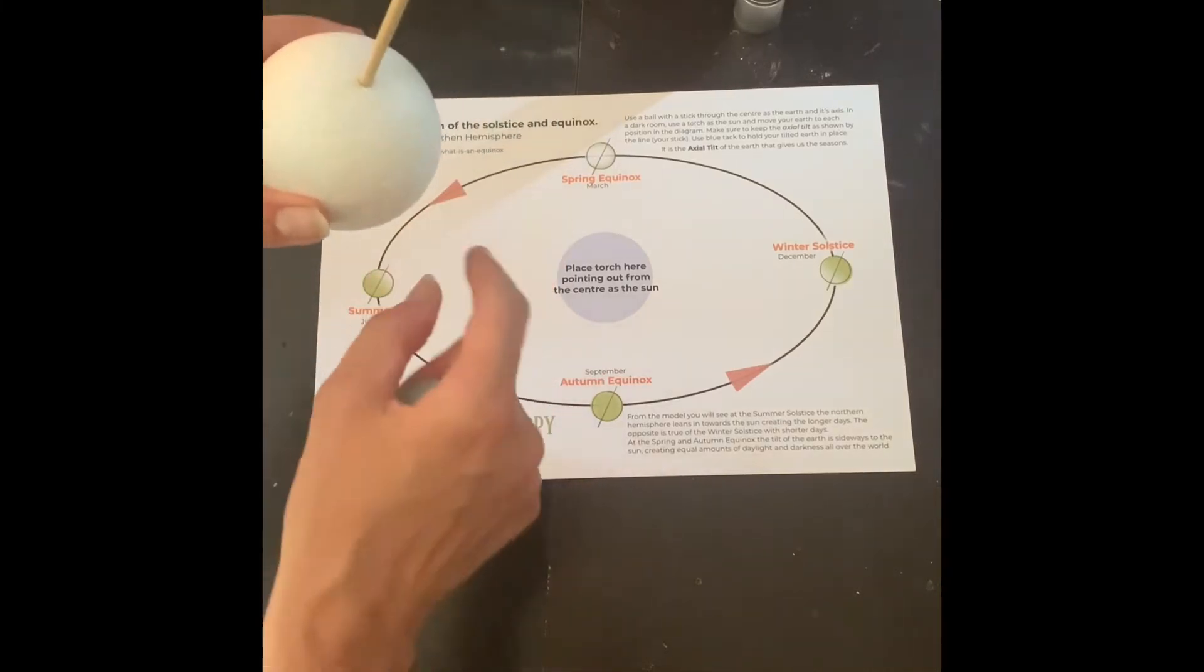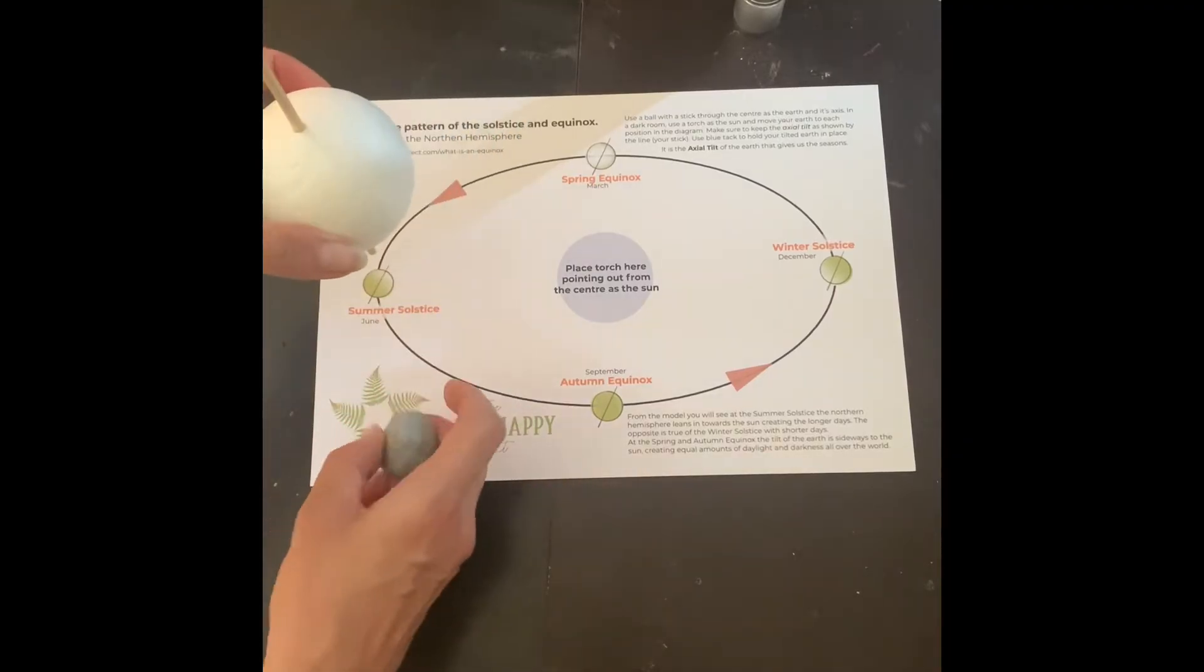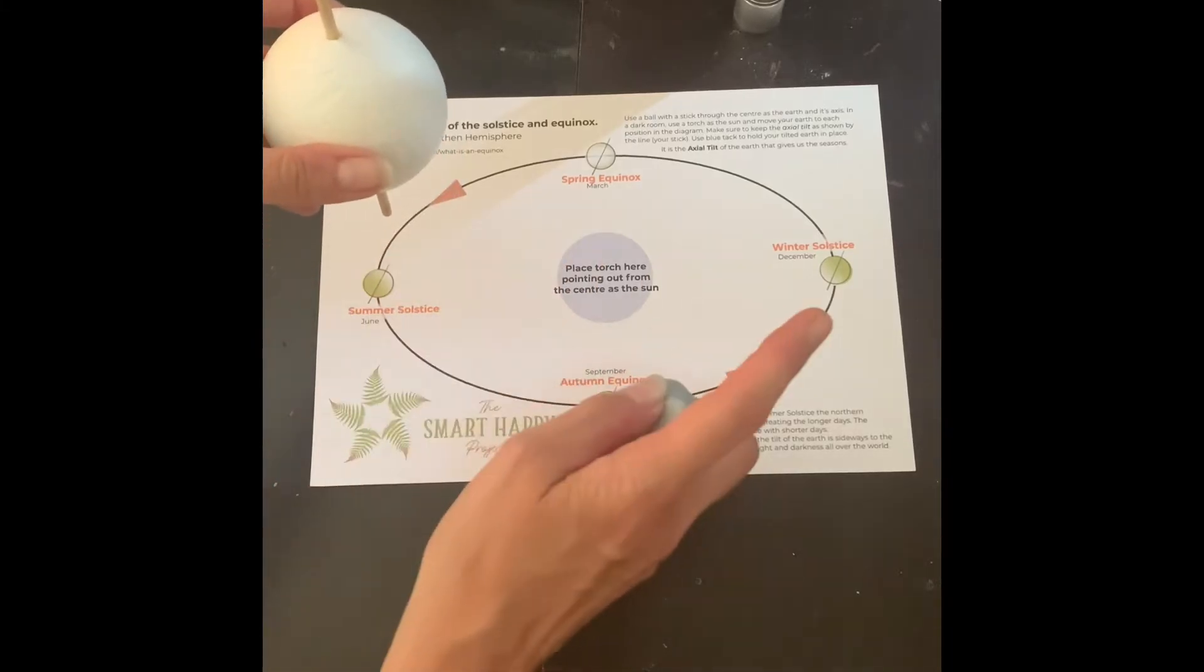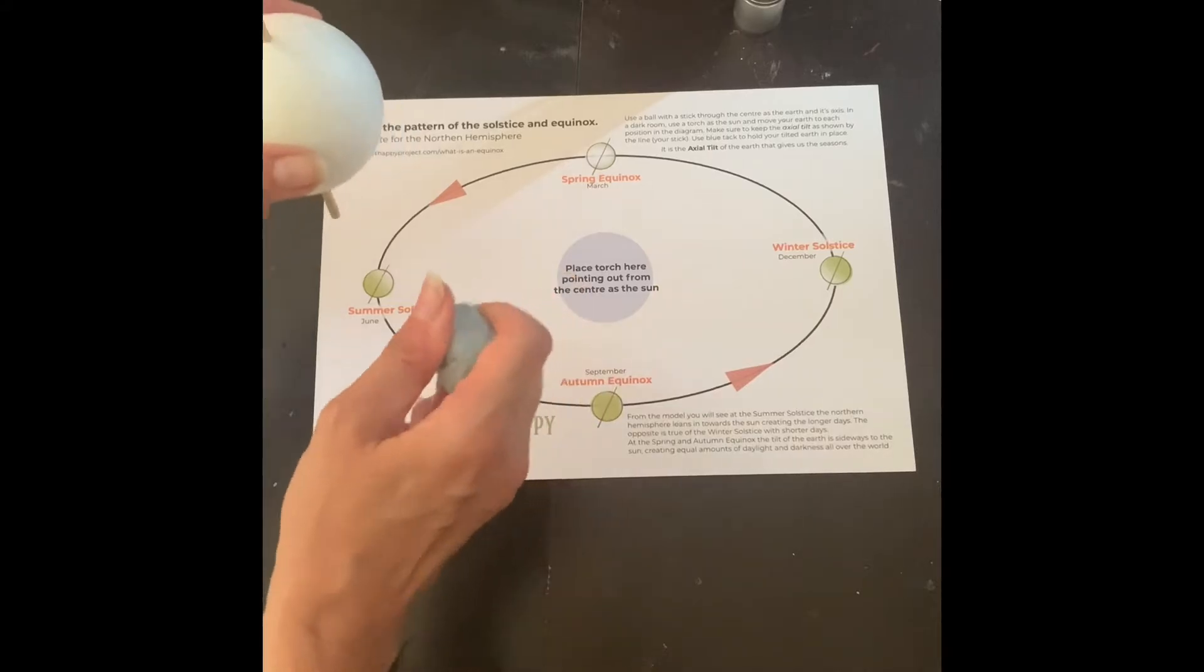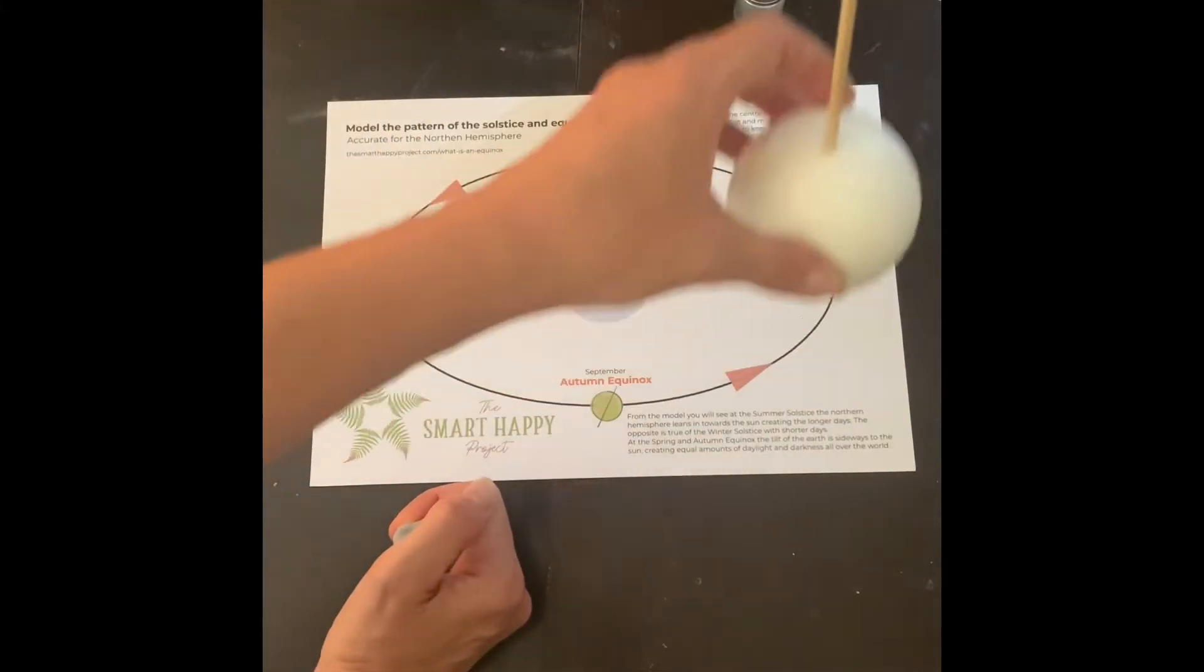And it's this axial tilt which is actually really important because this is what gives us the seasons and the solstices. Because if it was upright, if it wasn't leaning, the sun would hit it exactly the same all year round. But because it leans, the sun hits it at a different angle.